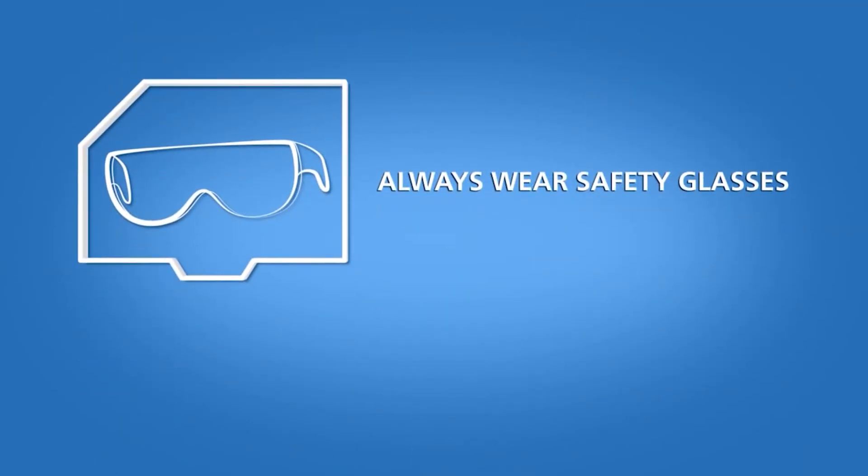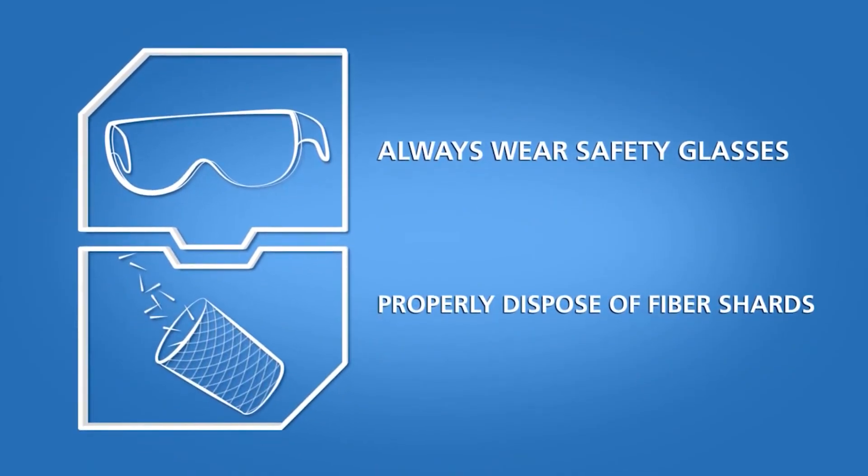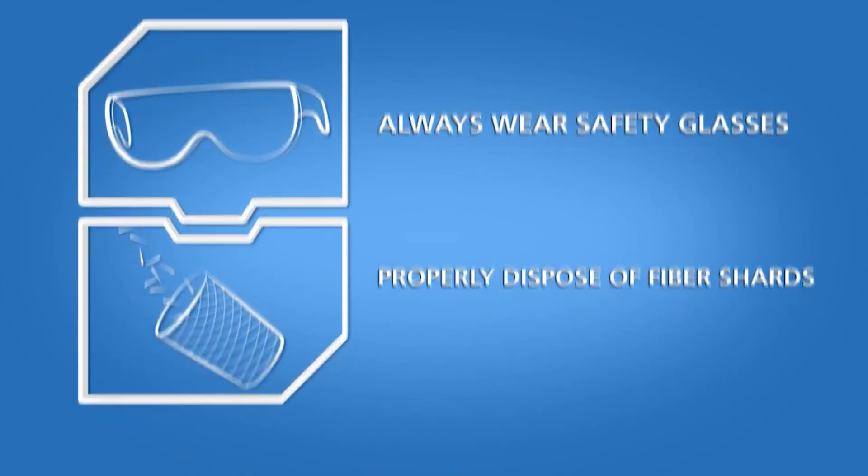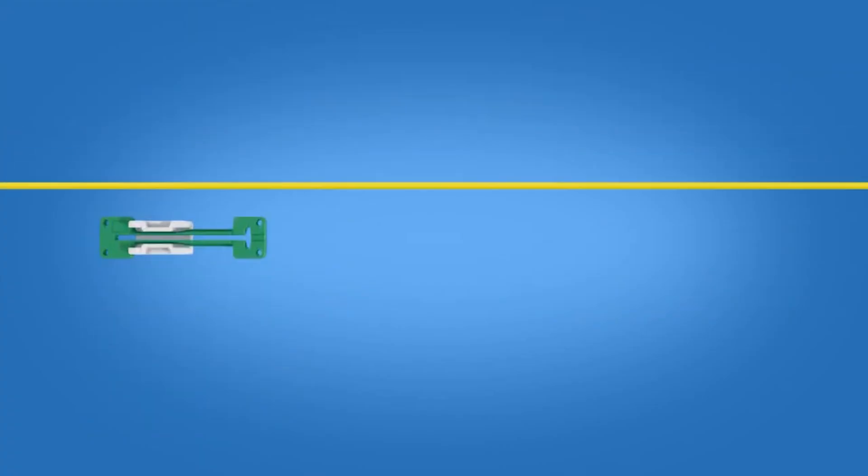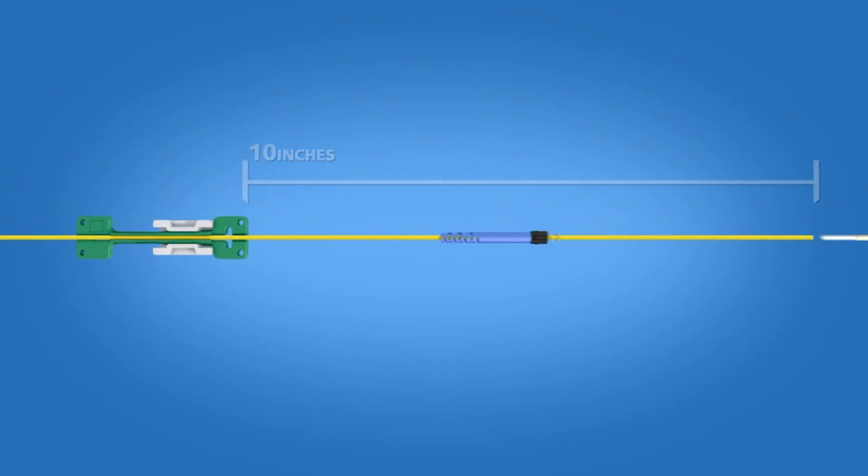Always wear safety glasses and properly dispose of fiber shards when handling and cleaving optical fibers. Begin by placing the cable into the 3 mm cable clamp approximately 10 inches from the end of the cable and engage the clamp. Slide the boot unit and the protective sleeve onto the cable.